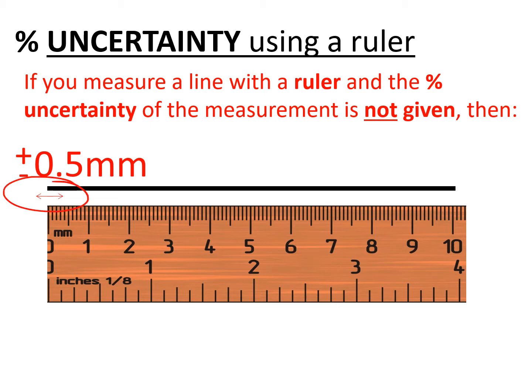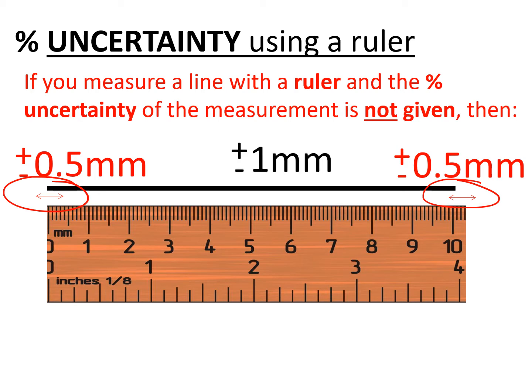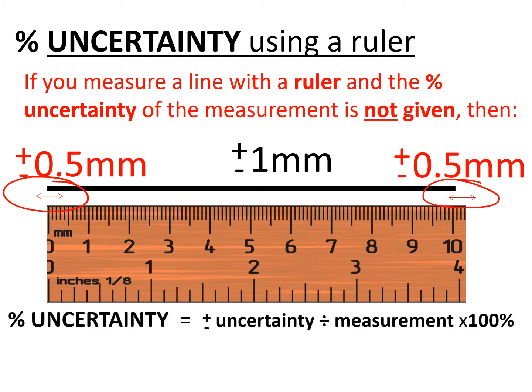There's also a source of uncertainty at the end of the line — plus or minus 0.5 millimetres there too. So the true value might be 0.5 millimetres longer or shorter at each end. We add these two sources of error together, so for a measurement of 10 millimetres with our ruler, there's a total uncertainty of plus or minus 1 millimetre.